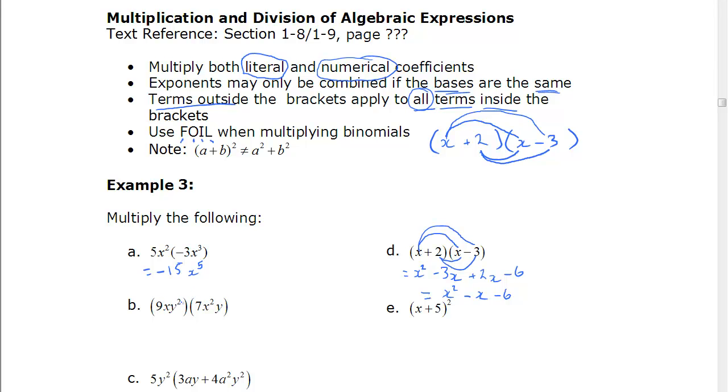Numbers with numbers again for example b here. So that gives us 63. x and x go together. So that's x cubed. y and y go together. That's y cubed.